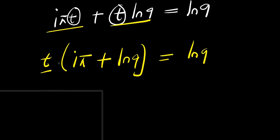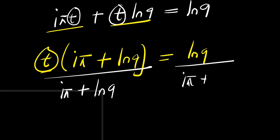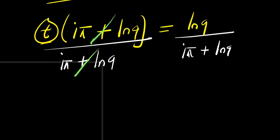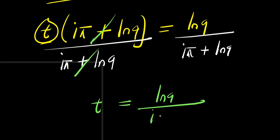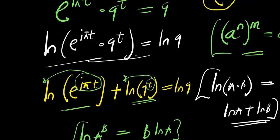Right now I'm going to isolate t because I'm solving for t, by dividing both sides by i times pi plus natural log of 9. So this cancels, and I'm going to have t equals natural log of 9 divided by i times pi plus natural log of 9. So that is it using this first method of solving.